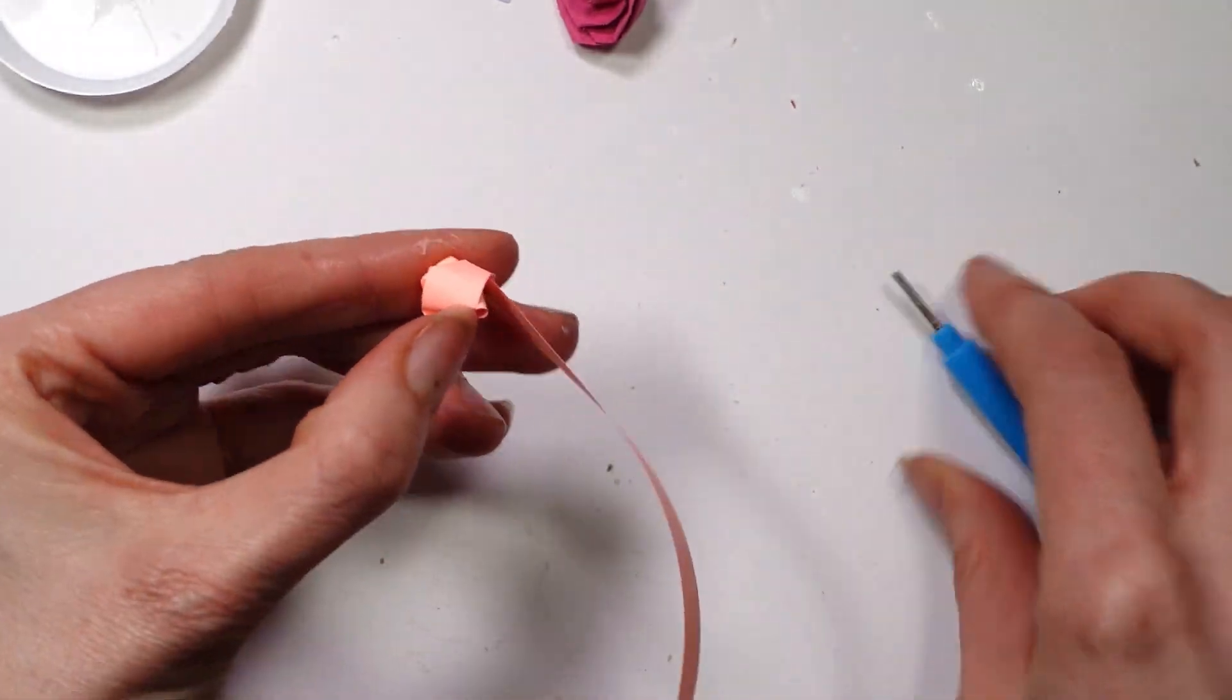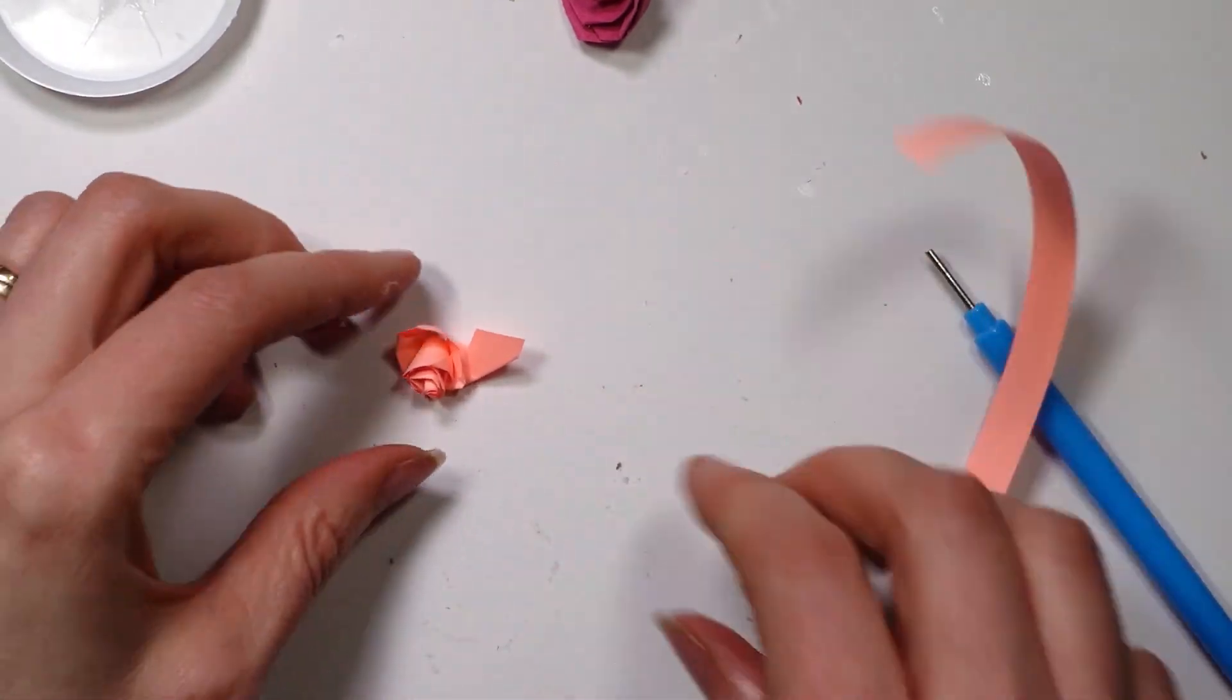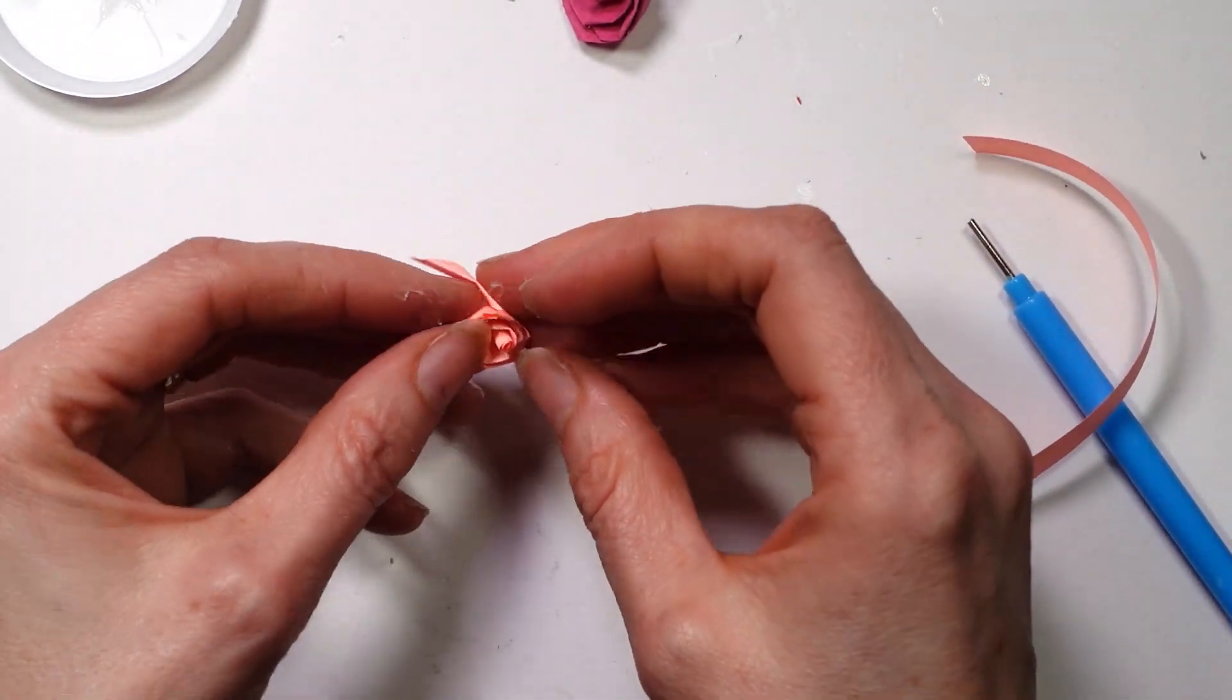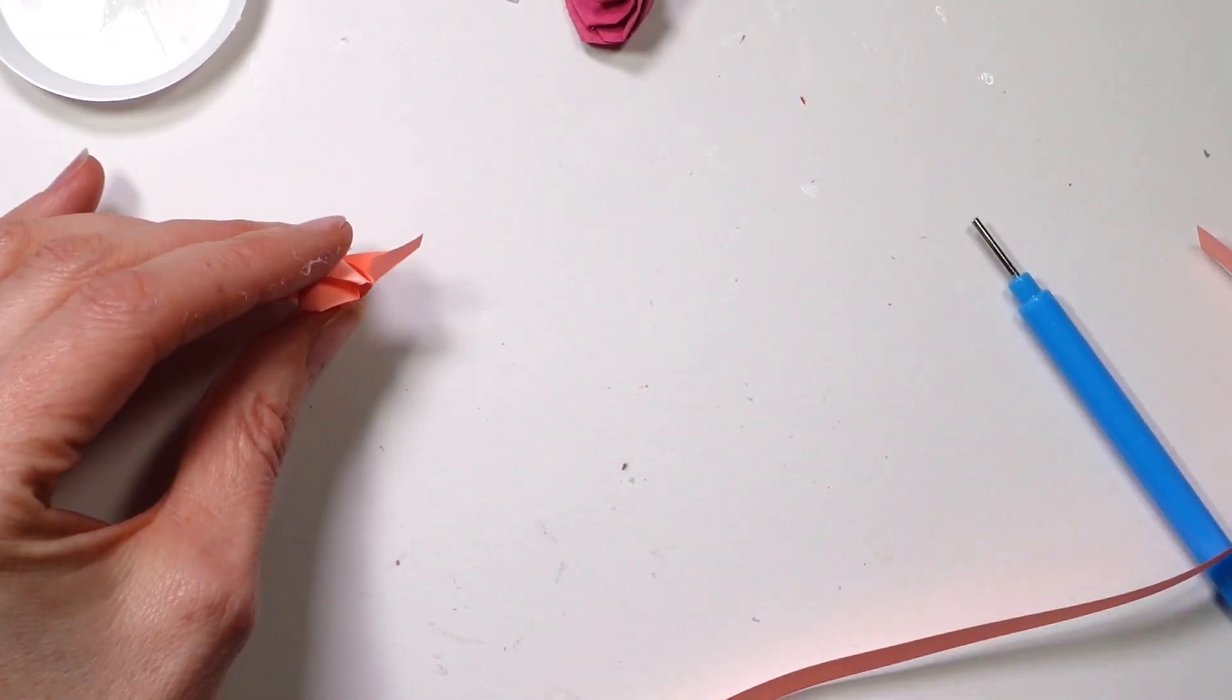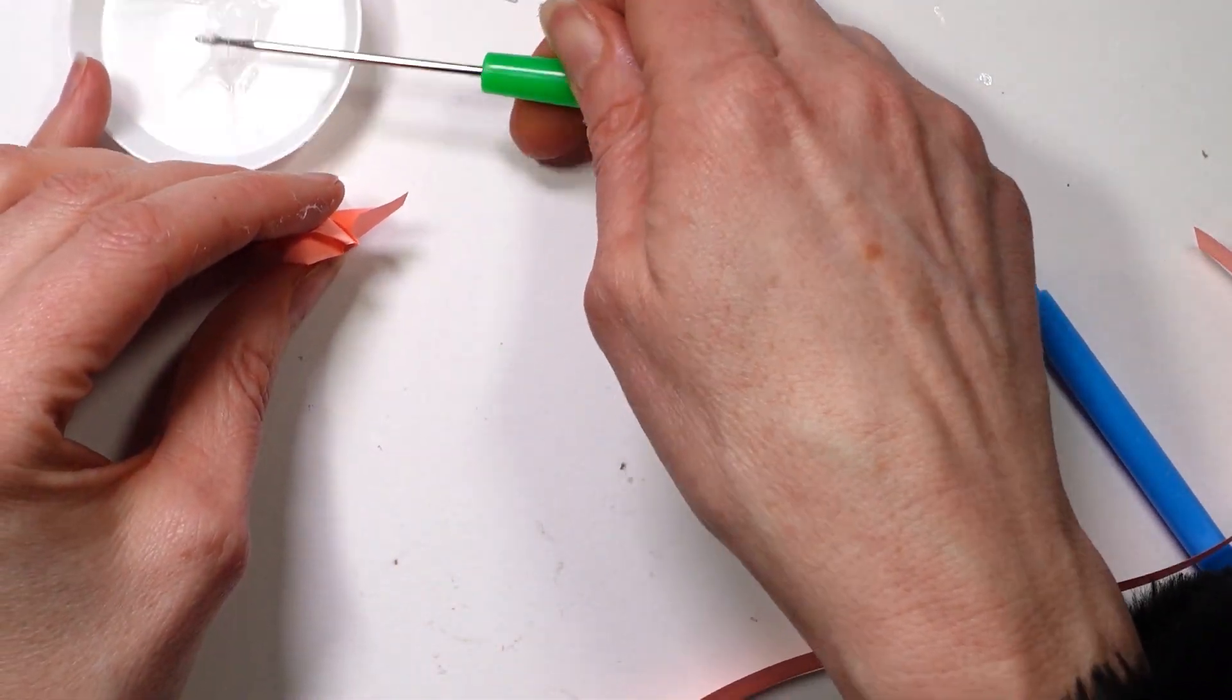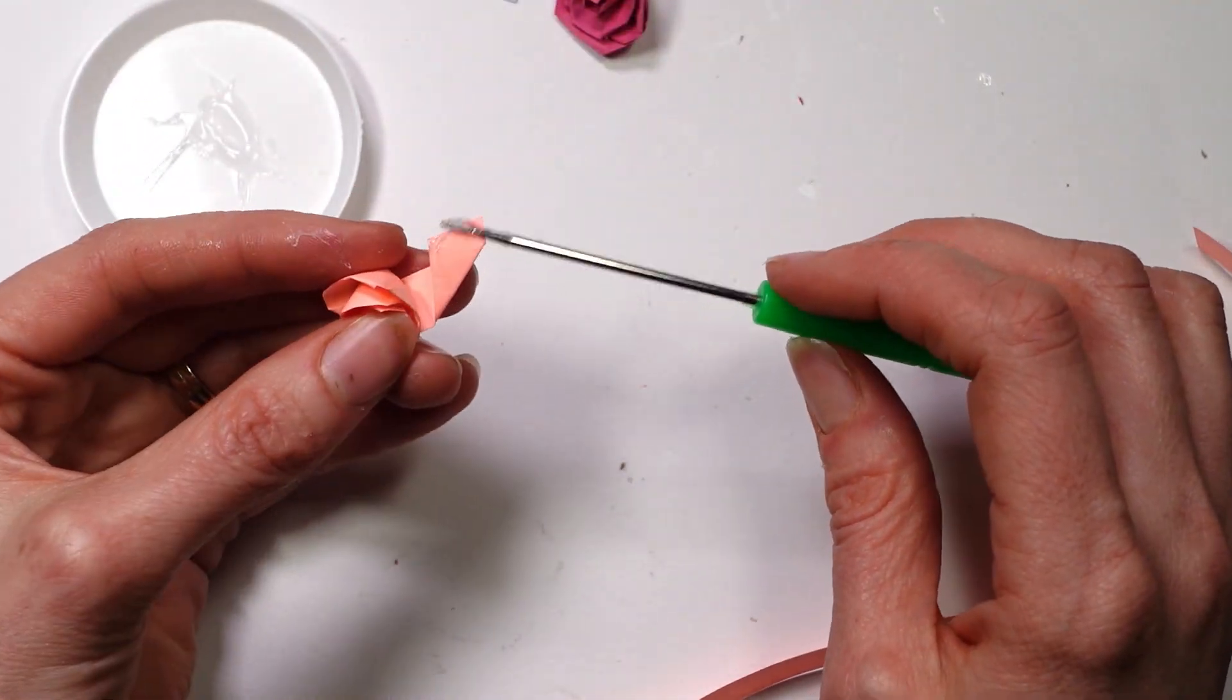Okay, now I'm just going to trim my paper. I'm going to let it ping out - I rolled it a little bit tight. I'm going to grab a teeny tiny bit of glue onto my paper.